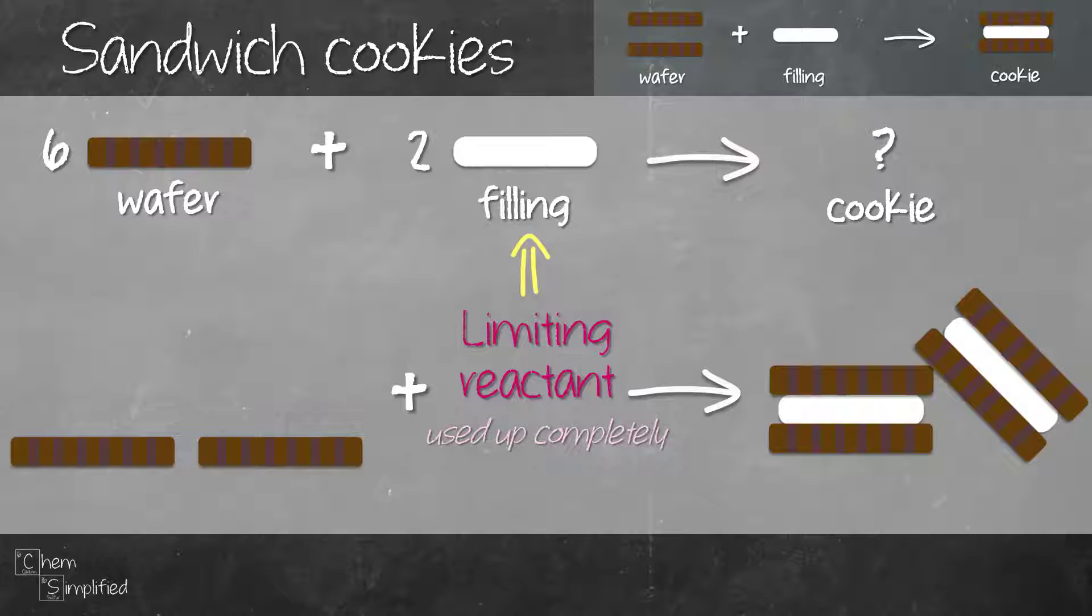The ingredient that we have left, that's called the excess reactant. In this case, it's the wafers. Excess reactants are the leftovers after the reaction has completed or after the recipe has completed.